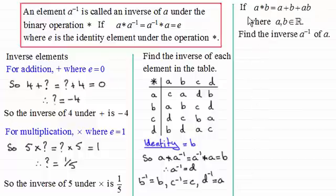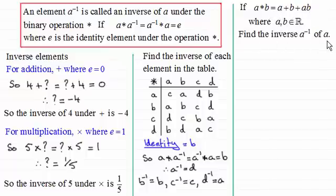You could also be asked to find the inverse elements when you're given a binary definition. In this example, if a star b equals a plus b plus ab, where a and b are real numbers, we've got to find the inverse of a. You might like to have a go at it — pause the video and when you come back you can check your methods against mine.